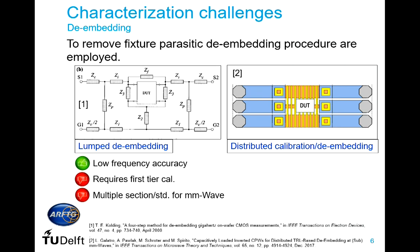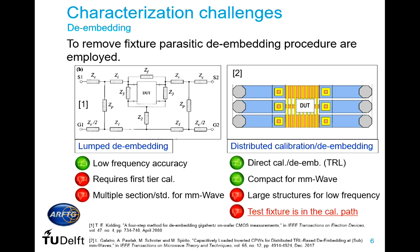Each approach has advantages. Lumped de-embedding has high accuracy at low frequency but requires a first-tier calibration and multiple sections for high accuracy at millimeter wave. On the other side, distributed calibration allows directly referencing to the device level and uses a compact test fixture at millimeter wave, but measuring at low frequency requires a large structure. Also, the test fixture is embedded in the calibration part, which is not a disadvantage per se, but as I will show in the next slide, it can become one.